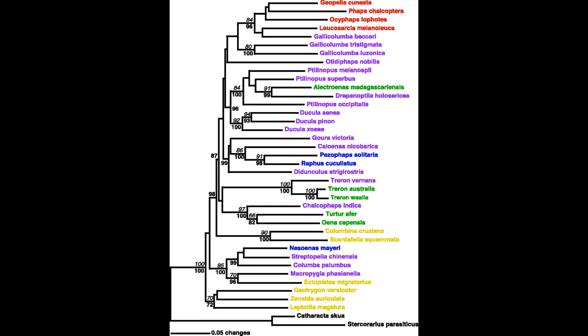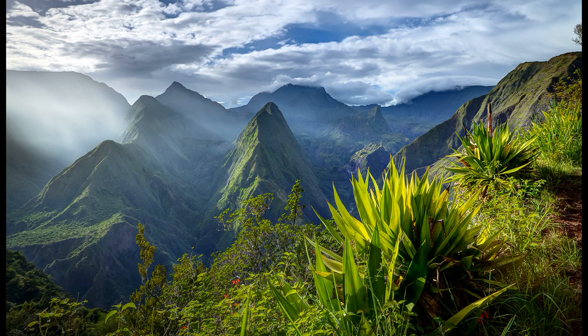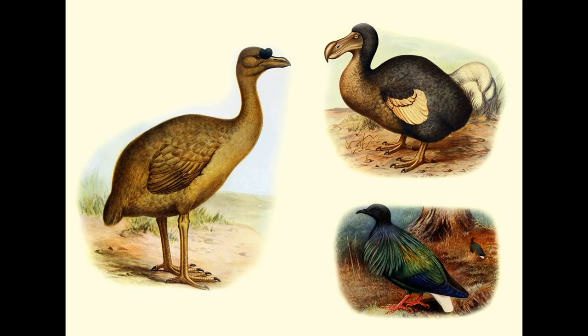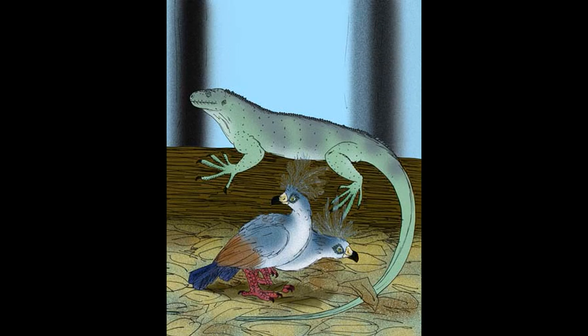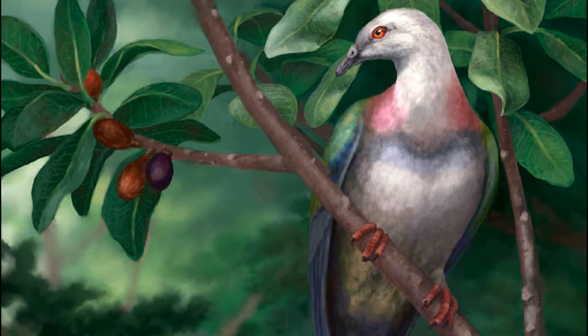Of note is that the common ancestor of the dodo and Nicobar pigeon lived 42.6 million years ago, while the common ancestor of the dodo and solitaire lived just 25.6 million years ago. However, neither Mauritius nor Rodriguez existed at that time — Mauritius is 7.8 to 6.8 million years old, while Rodriguez is just 1.5 million years old. This seems to imply that the ancestors of both the dodo and solitaire were island hopping long before they came to rest on their respective islands. Other large flightless pigeons have been found on Indo-Pacific islands, including the Viti Levu giant pigeon Natunaornis gigoura from Fiji, Bountifaps obsoleta from Henderson Island in the South Pacific, and the giant but still flight-capable Tongoenas burleyi from the Kingdom of Tonga. Clearly, pigeons have a propensity for flying to islands and becoming large and/or flightless.